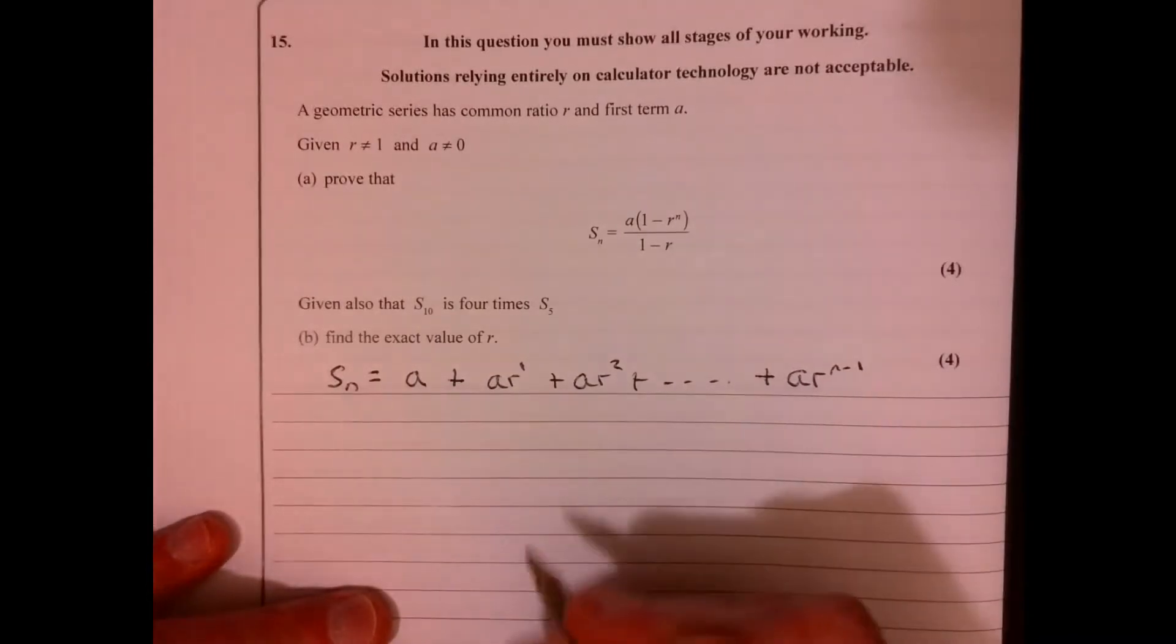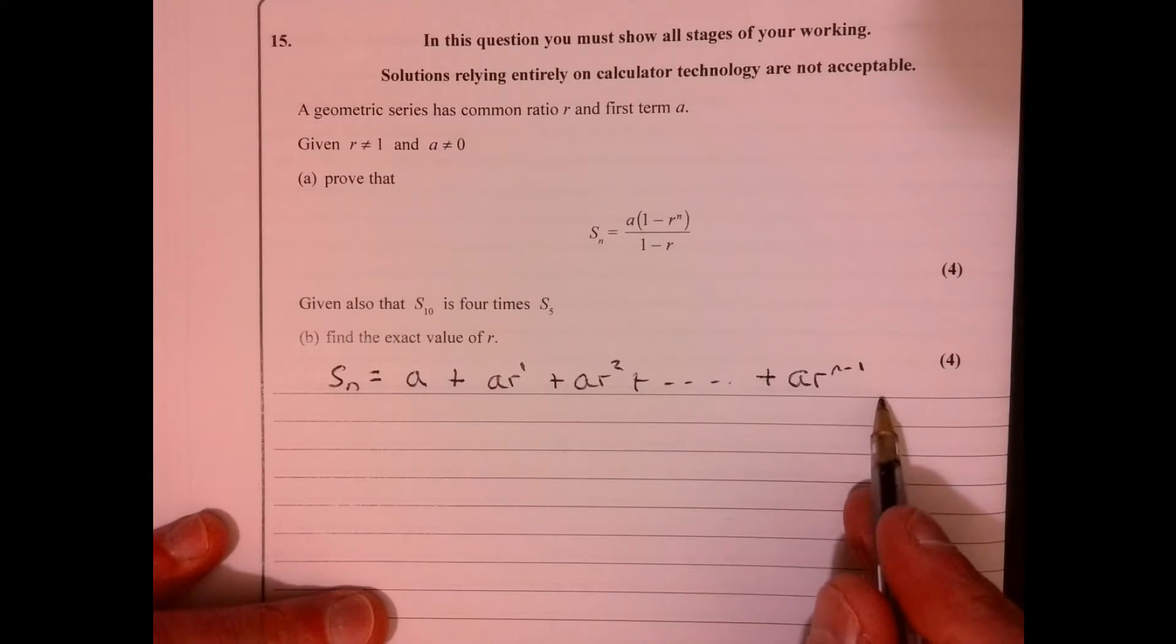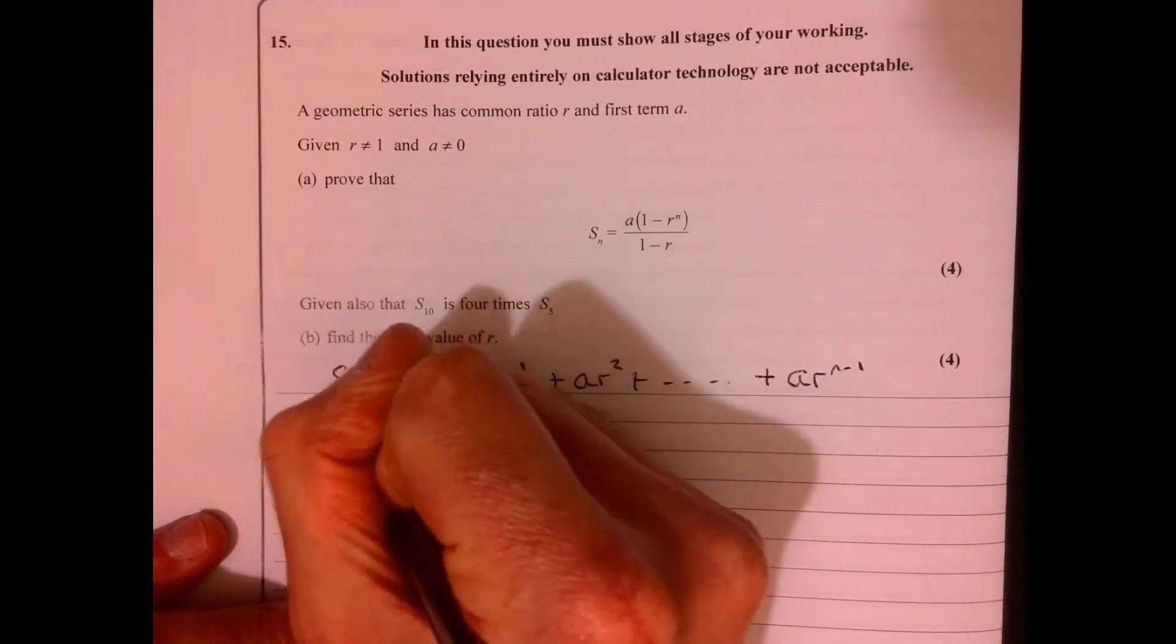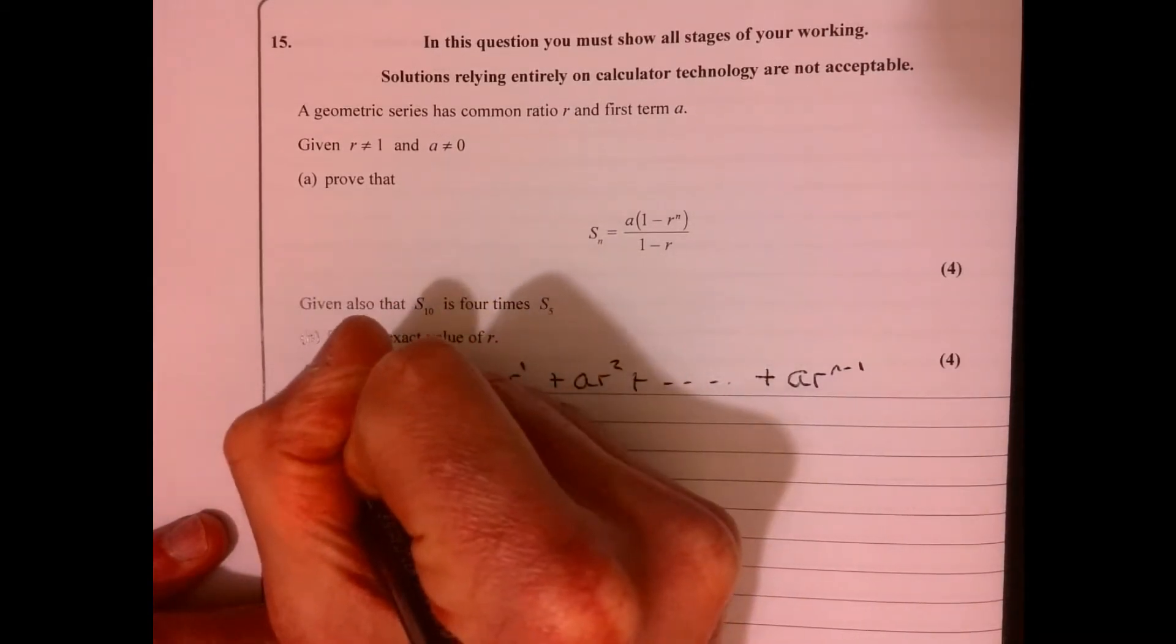Right, now the best way of doing this is let's multiply both sides by r. So if you multiply both sides by r, what are we going to get?